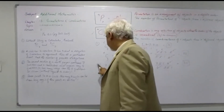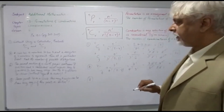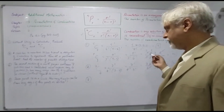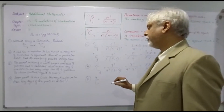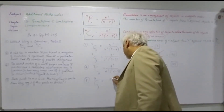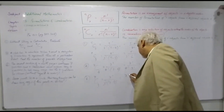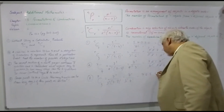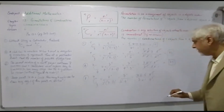Moving on to question seven or eight: 7 points lie on a circle — how many triangles can be drawn using any three of these points as vertices? Since a triangle needs 3 points, we compute C(7, 3): 7 factorial upon 3 factorial times (7 minus 3) factorial, which is 7 factorial upon 3 factorial times 4 factorial. Writing out: 7×6×5×4 factorial upon 3×2×1 times 4 factorial. The 4 factorials cancel, giving 7×5 = 35 triangles.